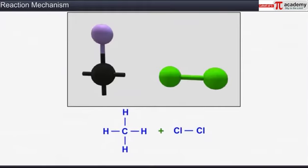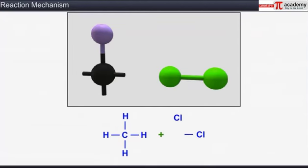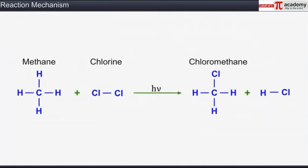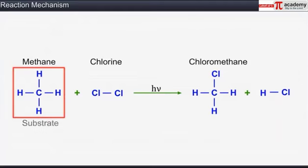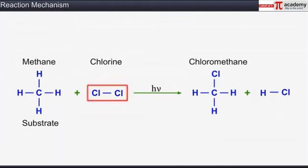In the reaction between chlorine and methane, methane supplies the carbon atom to form chloromethane. Hence methane is the substrate and chlorine, the other reactant, is the reagent.